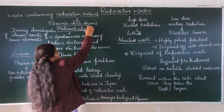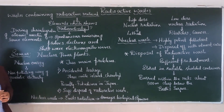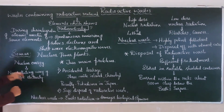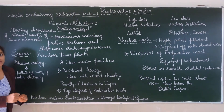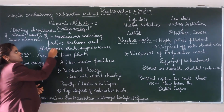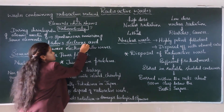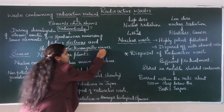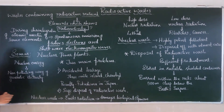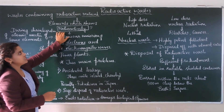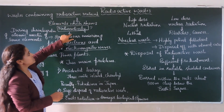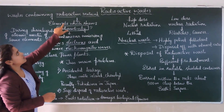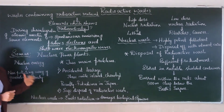What do we mean by radioactivity? During the disintegration of atomic nuclei of some elements, there is a spontaneous emission of protons, electrons, and electromagnetic waves, which are very harmful. This is radioactivity, and waste containing these elements is called radioactive waste.